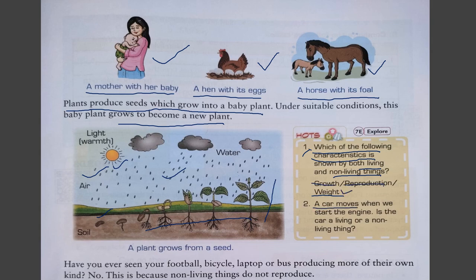A car moves when we start the engine — is the car a living or non-living thing? A car does not move on its own, so it is a non-living thing, because living things move on their own. Have you ever seen your football, bicycle, laptop, or bus producing more of their own kind? No — this is because non-living things do not reproduce.